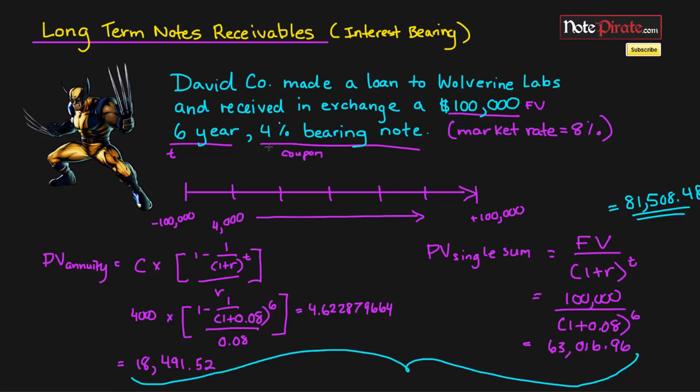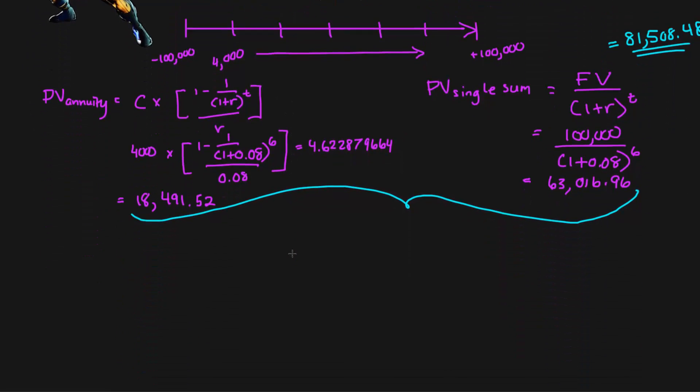if you remember, it's because the coupon rate is 4% and the market rate is 8%. And when the coupon rate is less than the market rate, there is going to be a discount, like we have in this question.